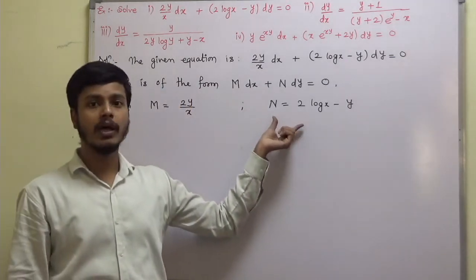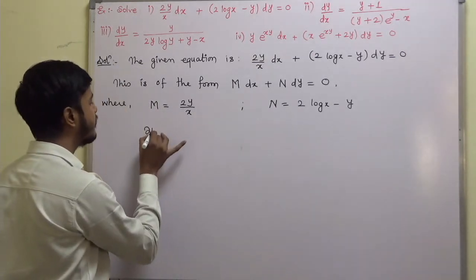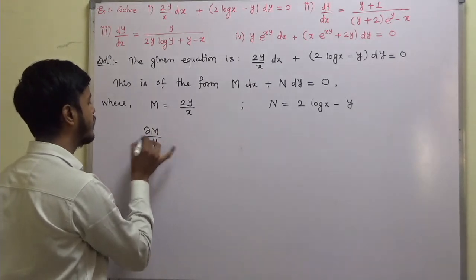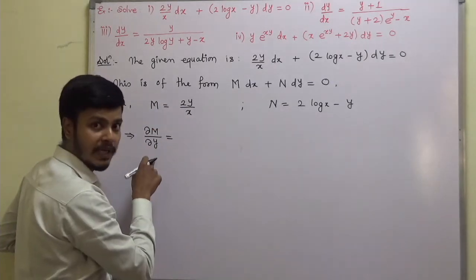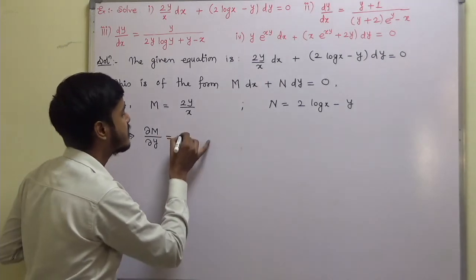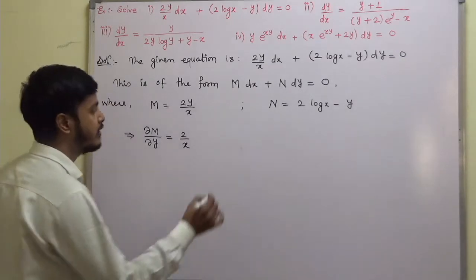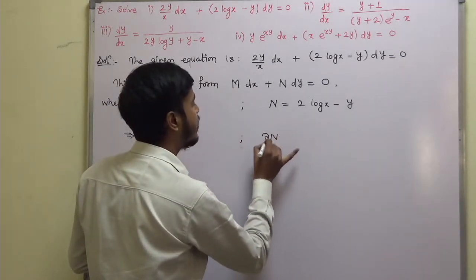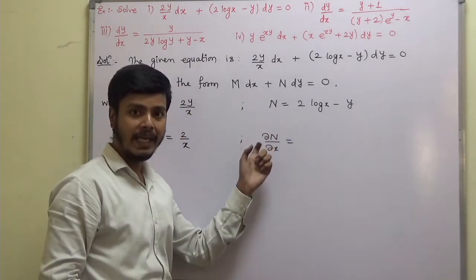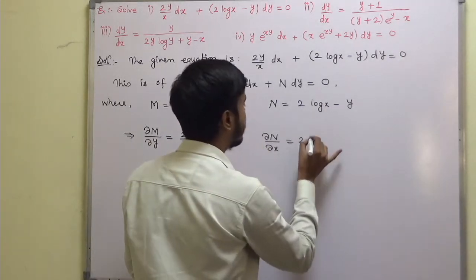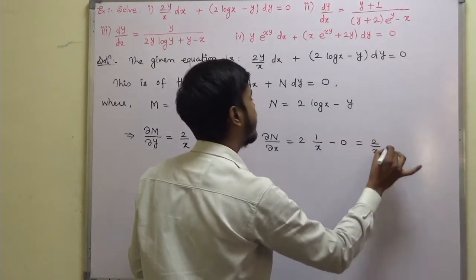After writing down M and N, we find their partial derivatives. The partial derivative of M with respect to y, keeping x constant: 2 is constant, so ∂M/∂y = 2/x. Likewise, ∂N/∂x: derivative of 2 log x with respect to x is 2 · (1/x) minus 0, so ∂N/∂x = 2/x.